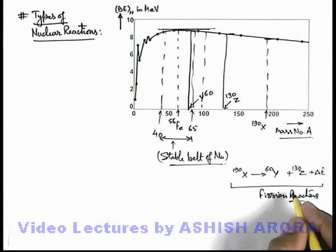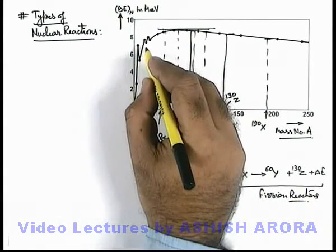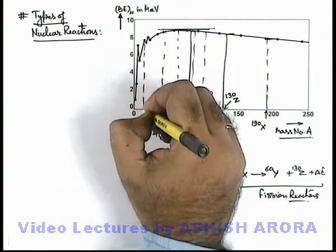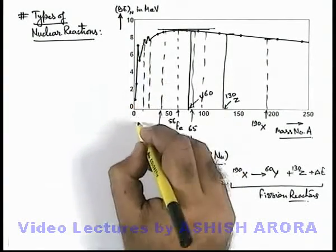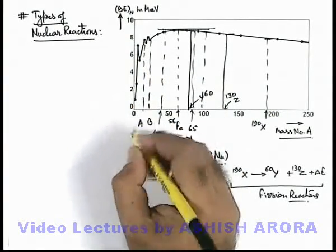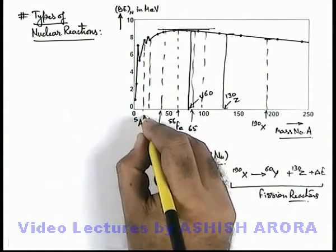And other kinds of reactions are involving the lower weight elements. Say if there are two lower weight elements A and B which are having mass number 5 and 10.